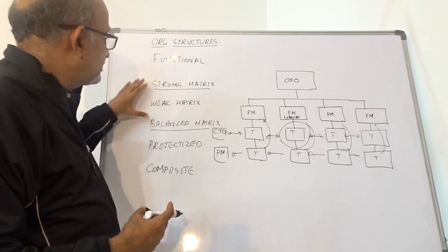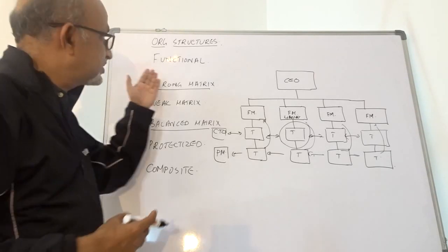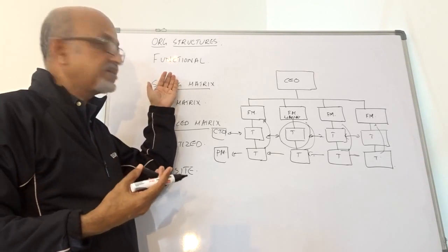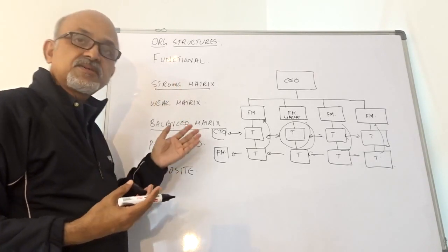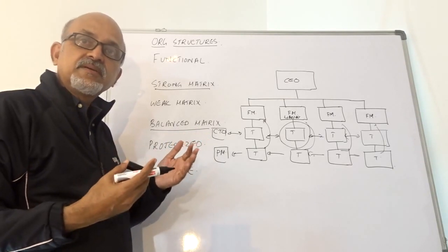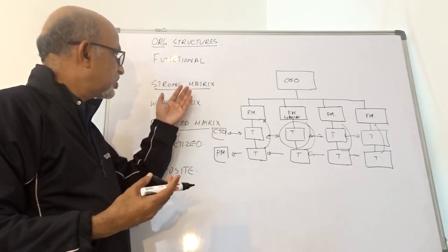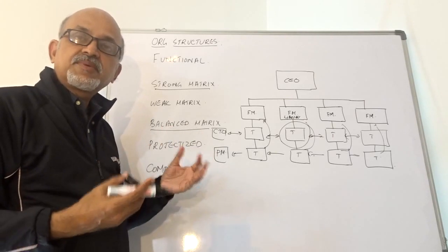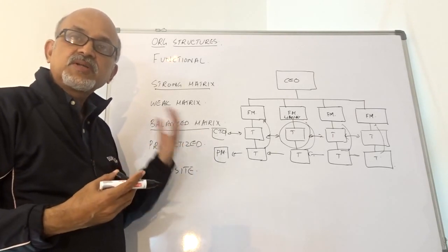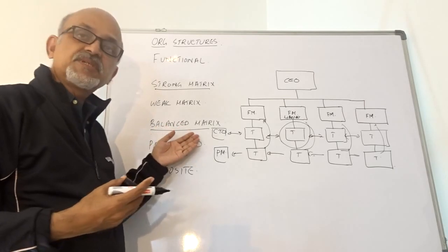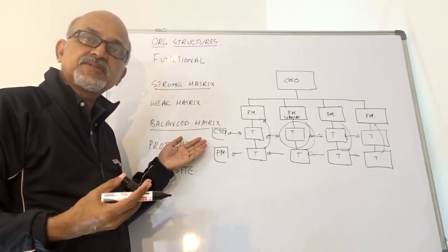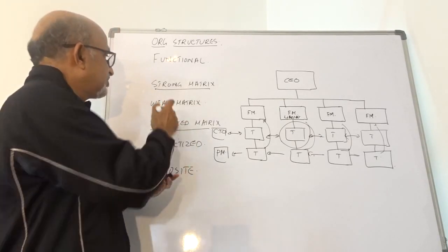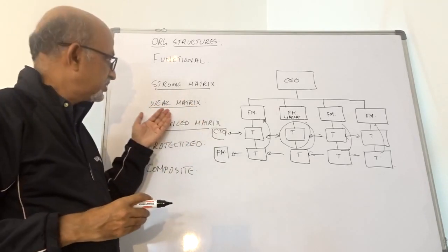So we discussed the functional organization — the project manager has least authority, and most manufacturing organizations fall here. Then, a matrix organization where there is dual reporting, which can be further classified into strong matrix, weak matrix, and balanced matrix. In a strong matrix, the project manager has more authority than the functional manager. In a balanced matrix, both share the same authority level. In a weak matrix, the functional manager has more authority than the project manager.